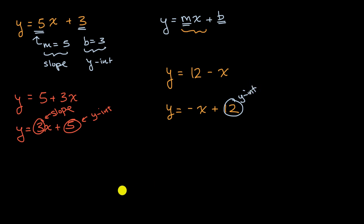But what's my slope? Well, the slope is the coefficient on the x term. But all you see is a negative here. What's the coefficient? Well, you could view negative x as the same thing as negative 1x. So your slope here is going to be negative 1.